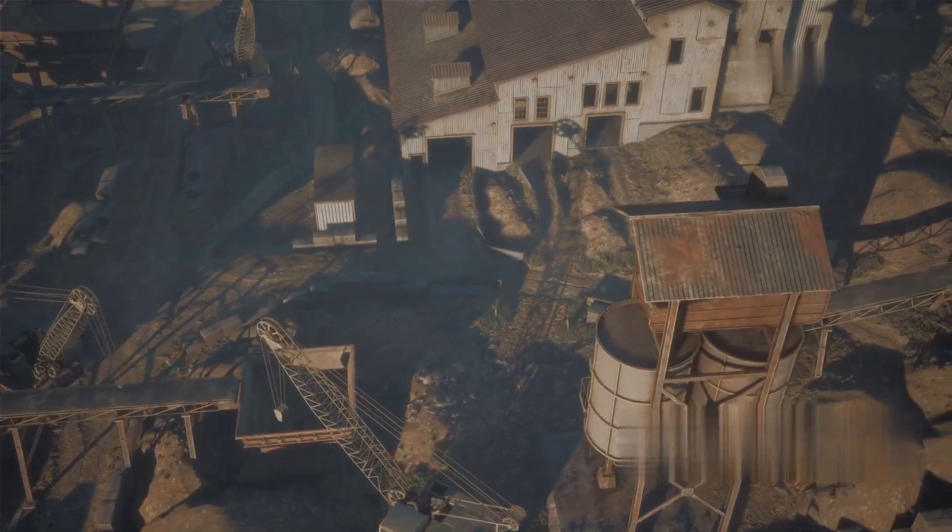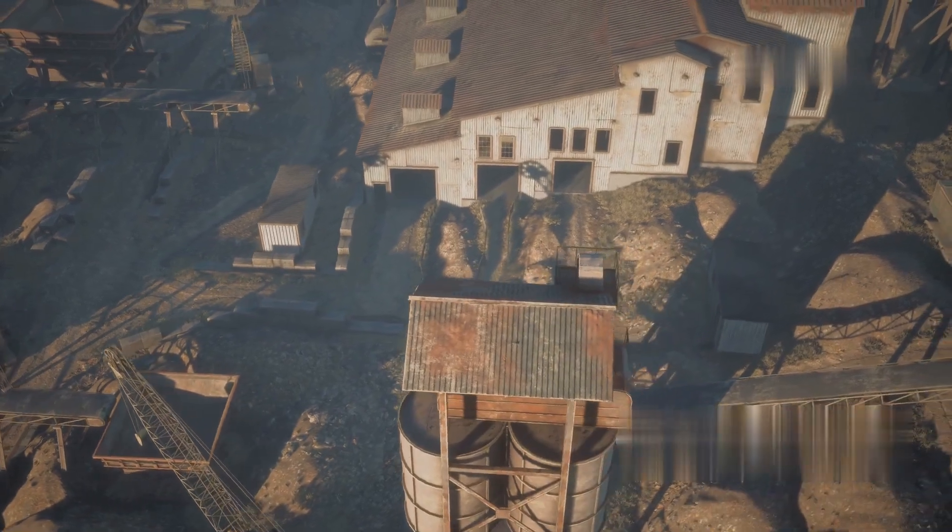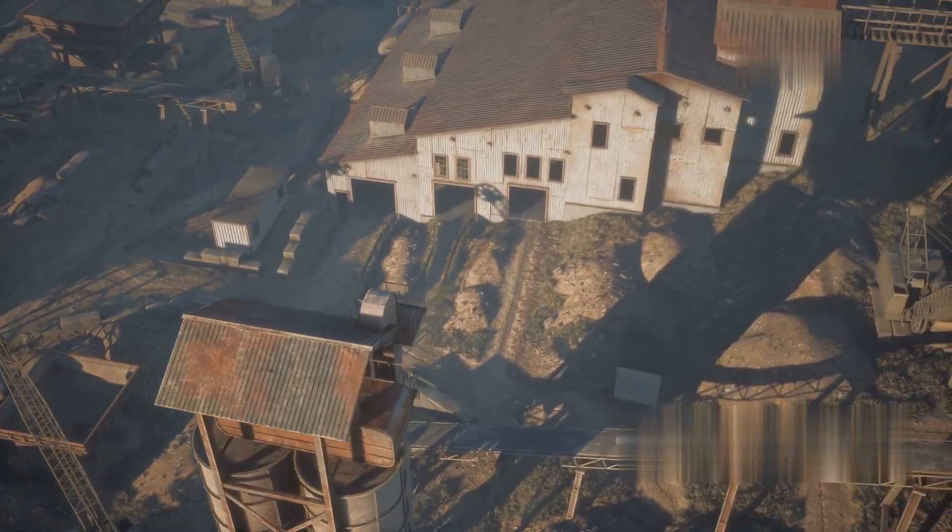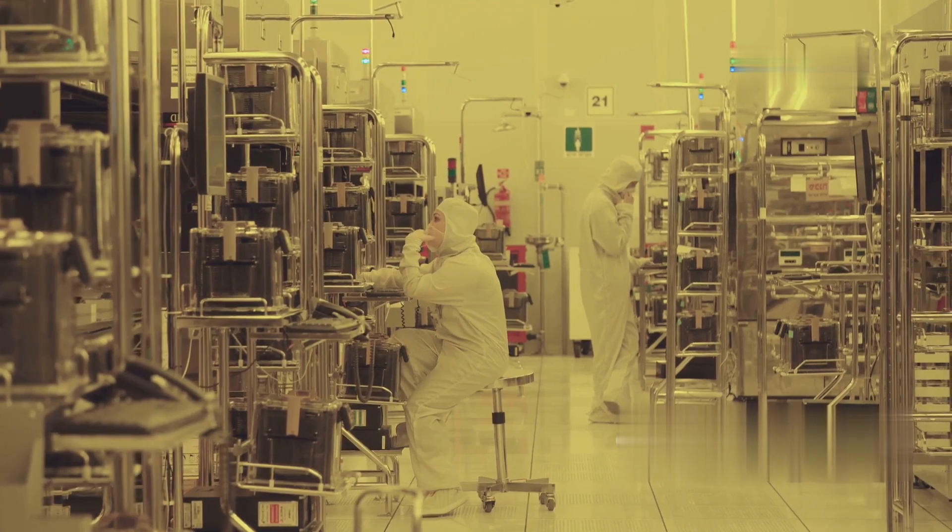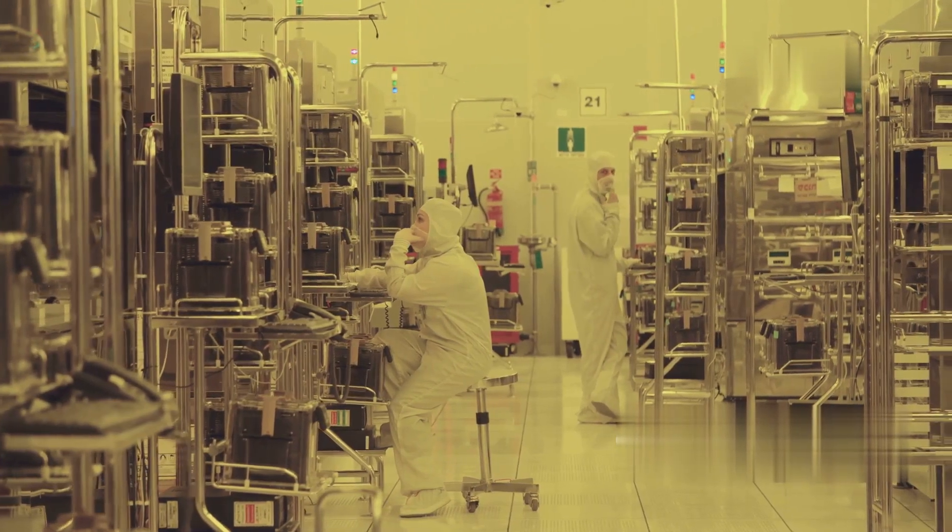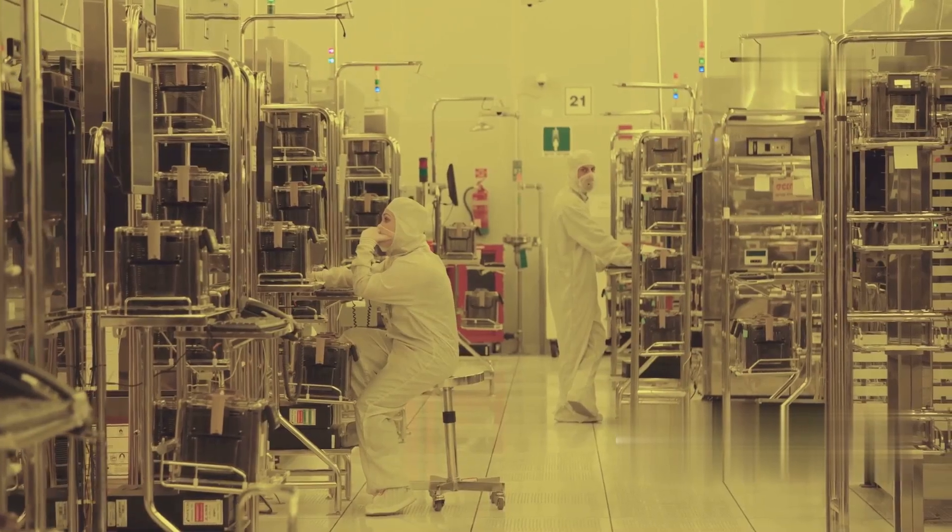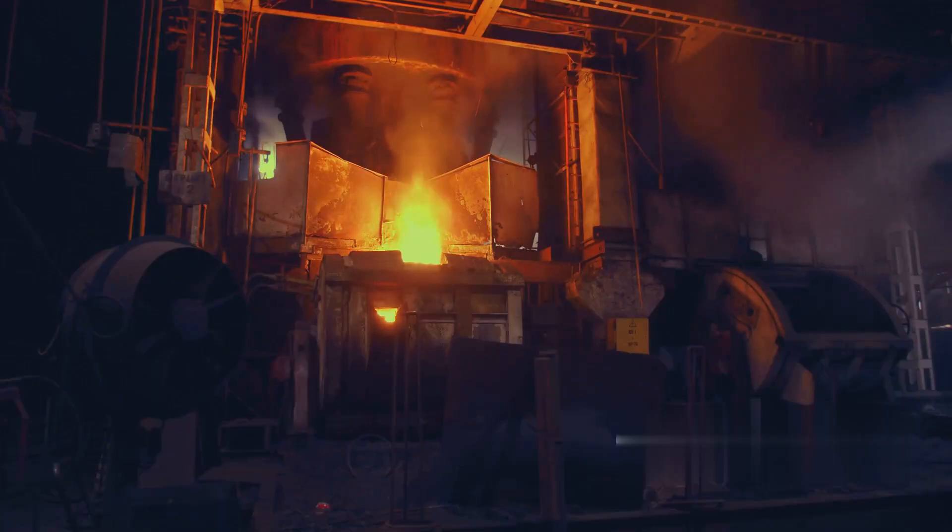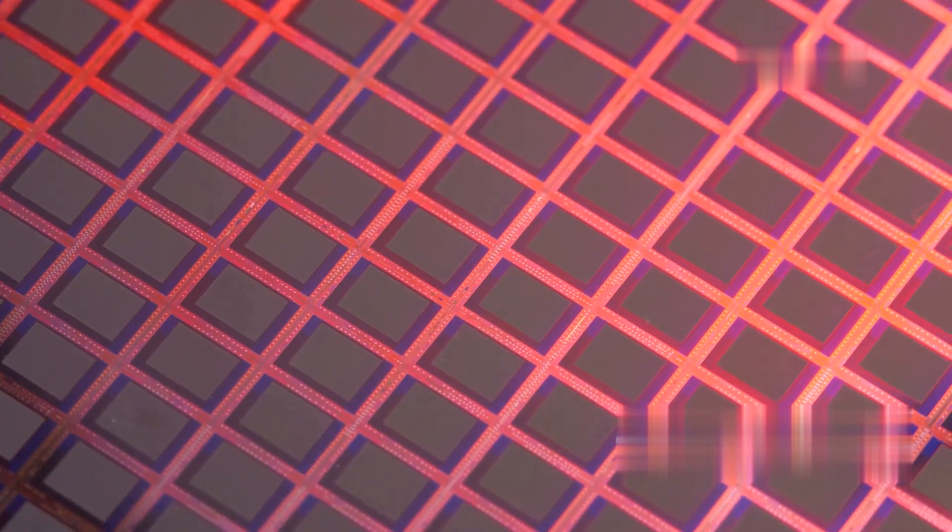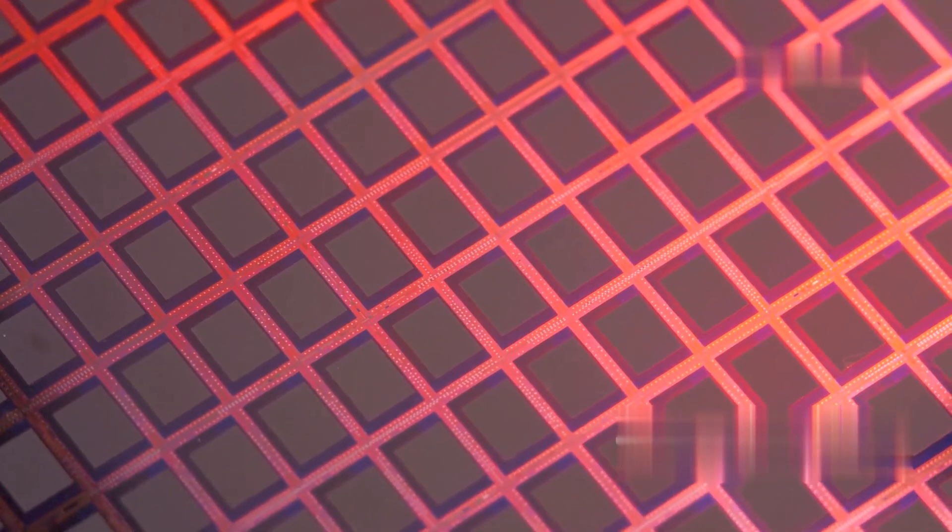The journey begins with ordinary sand, an abundant source of silicon dioxide. This raw material undergoes a series of chemical reactions to extract pure silicon, the semiconductor material at the heart of transistors. The process starts with heating the sand to high temperatures, converting it to metallurgical-grade silicon. This initial silicon is still impure, containing other elements.